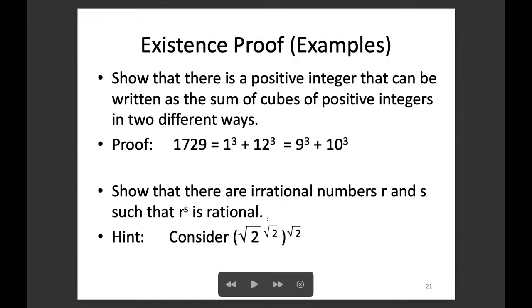Now for another example — a non-constructive one. We want to show there exist two irrational numbers R and S (which can be the same) such that R to the power S is rational. Recall that rational numbers can be expressed as a ratio between integers, and we have already shown that the square root of 2 is irrational. Very strangely, we want to show that some irrational number to the power of another irrational number can yield a rational result.